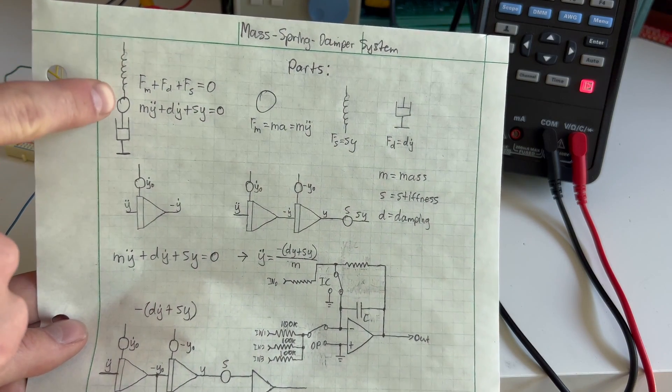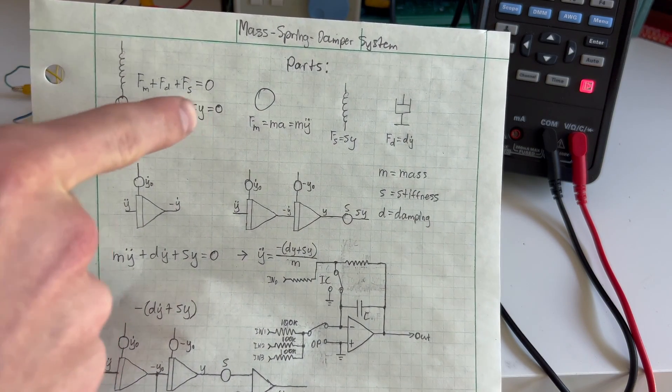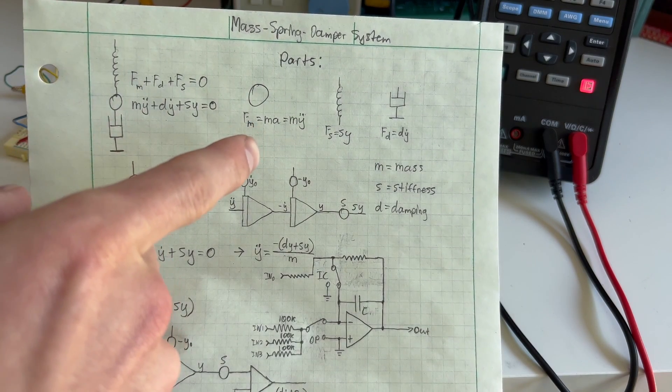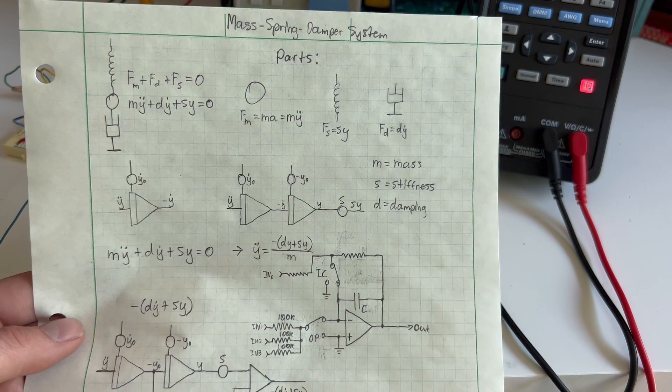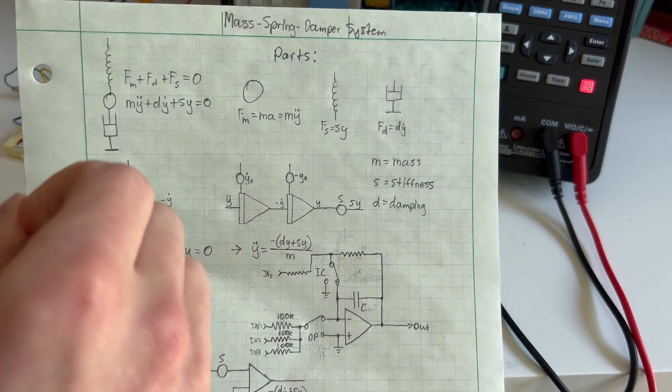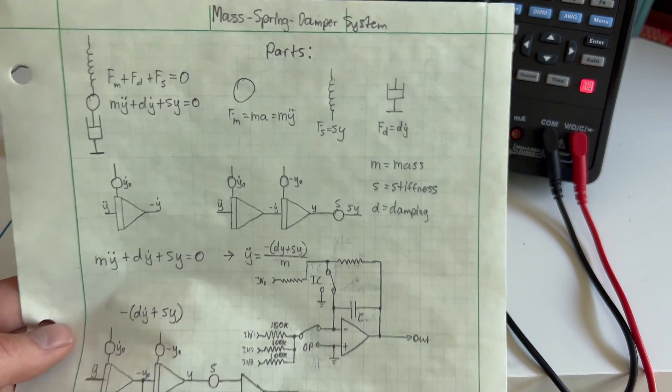You have a mass, a spring, and a damper, and it's expressed by this differential equation here. You have F equals ma, the spring equation, the spring constant, the stiffness of the spring, and then of course you also have the damper and its constant.